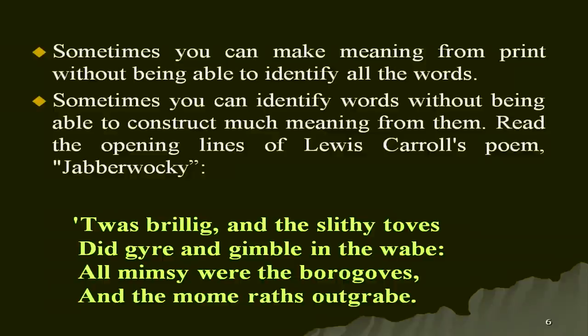Sometimes you can make meaning from print without being able to identify all the words. Sometimes you can identify words without being able to construct much meaning from them. For example, look at lines from Lewis Carroll's poem Jabberwocky: 'Twas brillig and the slithy toves, did gyre and gimble in the wabe, all mimsy were the borogoves, and the mome raths outgrabe.' Although someone who knows the Roman script can read these words fairly easily, we do not comprehend anything — we cannot make much meaning from them.